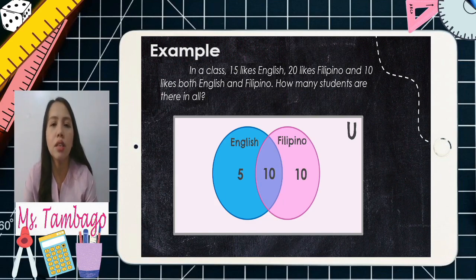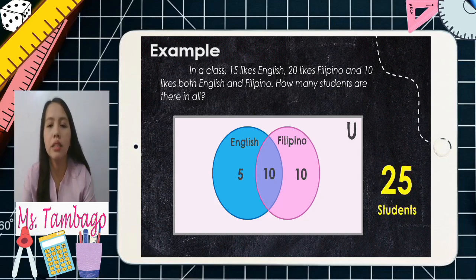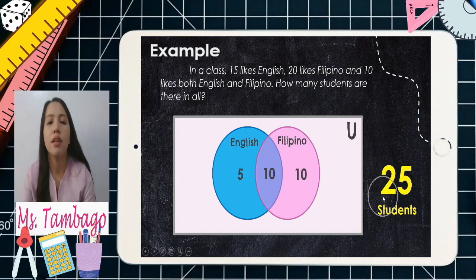Now, the question: how many students are there in all? All you have to do is add all the numbers inside the two circles. So, 5 plus 10 plus 10 gives us 25 students.